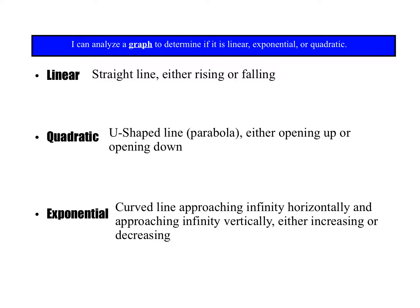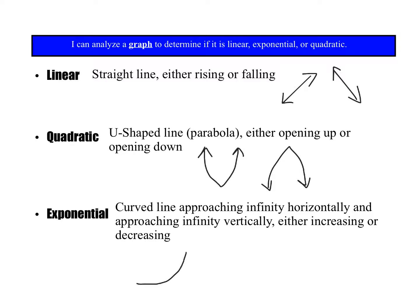Exponential is either increasing — getting bigger as we move left to right — or decreasing, getting smaller. So we have positive linear, negative linear, positive quadratic, negative quadratic, exponential growth, or exponential decay.